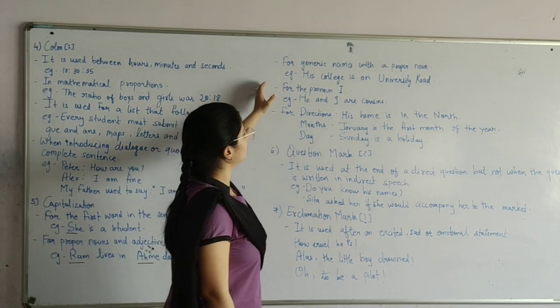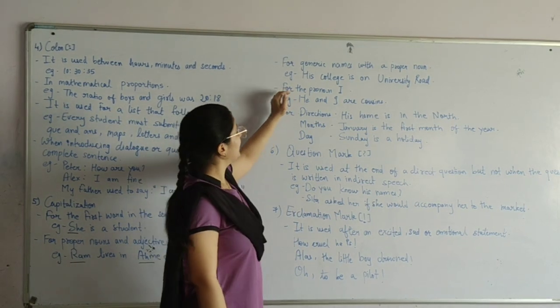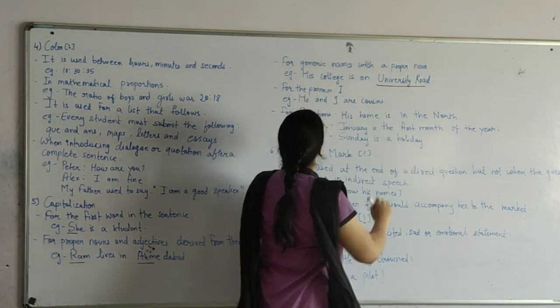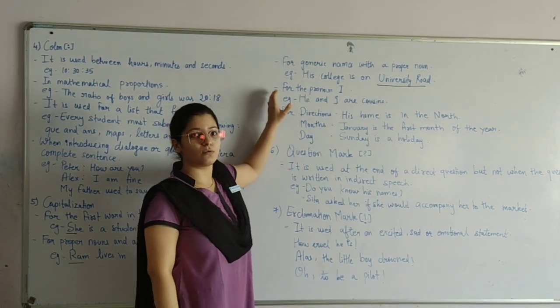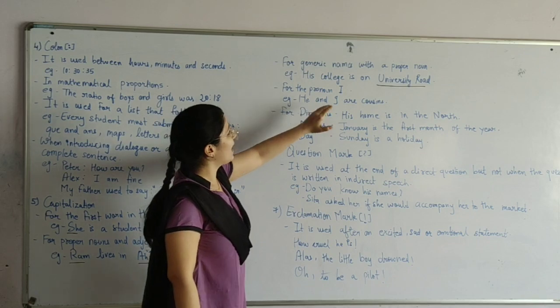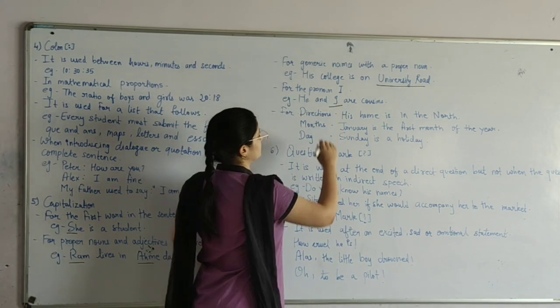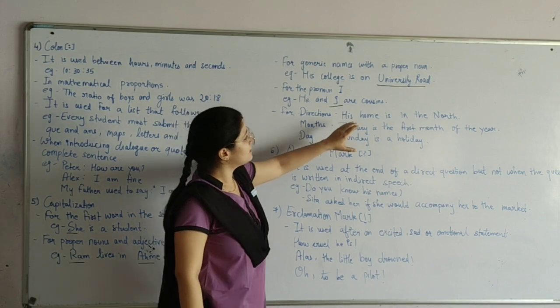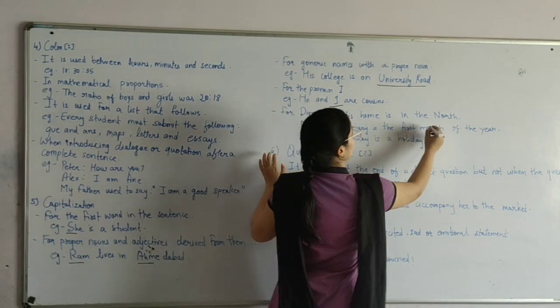Next, for title with proper noun. His college is on University Road. Next, for pronoun I. For example, he and I are cousins. Next, for direction. His house is in the North.